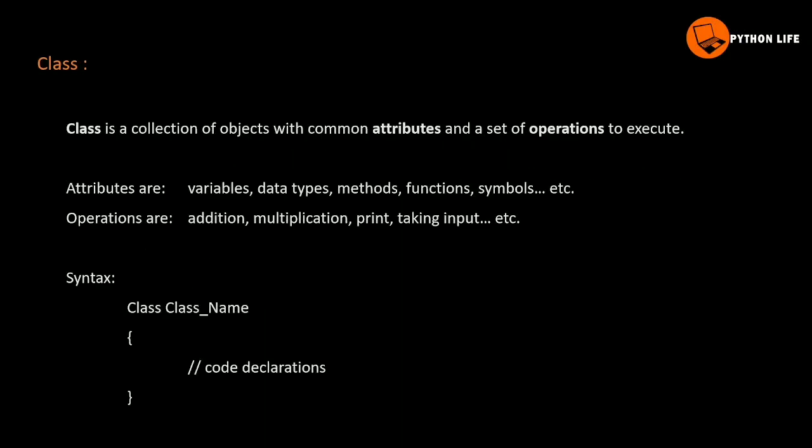Next, class. Class is a collection of objects with common attributes and a set of operations to execute. The class is the collection of objects. The objects can be used for a specific task. For example, the attributes are variables, data types, methods, functions, and symbols.